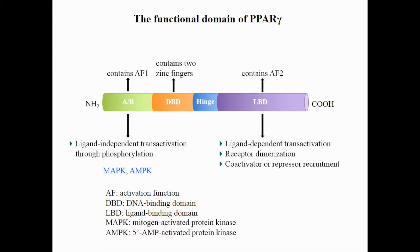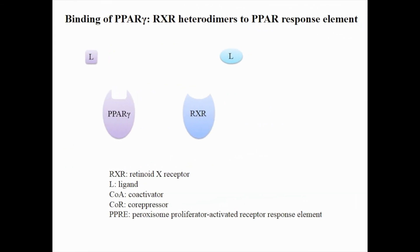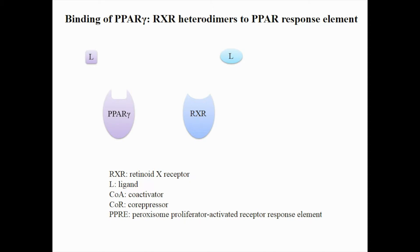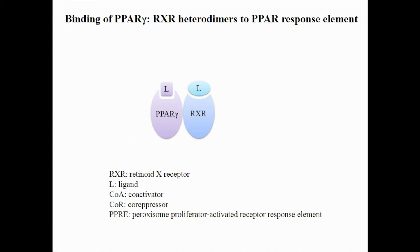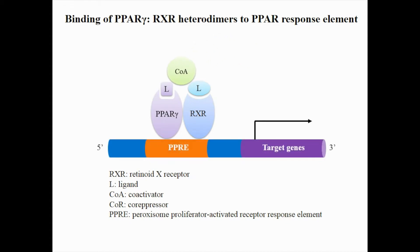PPAR gamma can be activated by natural ligands such as 15-deoxy-prostaglandin J2, or synthetic ligands such as thiazolidinediones. In an activation state, once ligand binding occurs, PPAR gamma heterodimerizes with Retinoid X receptor, and this complex recruits co-activators which have histone acetylase activity to promote transcription for genes related to lipid and glucose metabolisms, as well as inflammation.